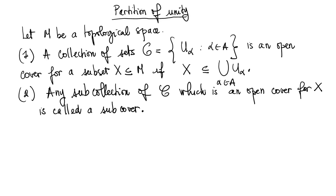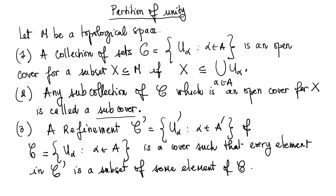Secondly, any sub-collection of C which is an open cover for X is called a sub-cover. Thirdly, a refinement C-prime, as a collection of sets containing U_alpha-prime where alpha runs over some indexing set A-prime, is a cover such that every element in C-prime is a subset of some element of C. This is called a refinement of C.